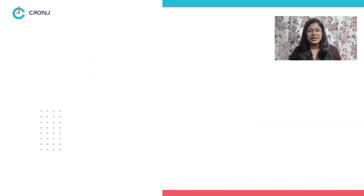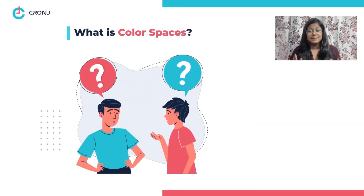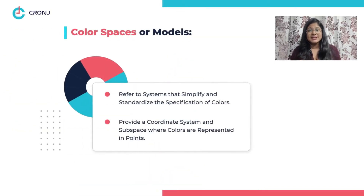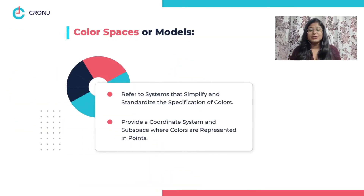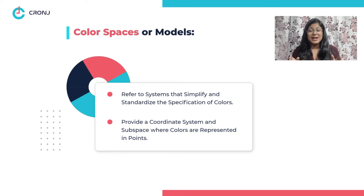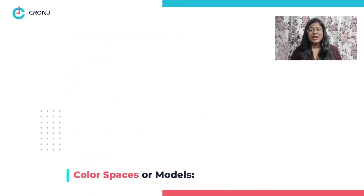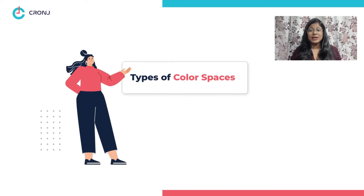Now, what are color spaces? Color spaces or models refer to the systems that simplify the specification of colors in a standardized manner. These systems provide a coordinate system and a subspace within it where each color is represented by a single point. The two major types of color spaces include device-based and perception-based color spaces.